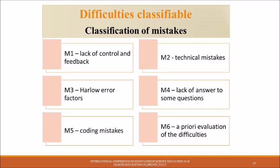M6: A priori evaluation of the difficulties. The students are not able or do not pay attention to evaluate the difficulties of each question or problem, which also includes being able to choose the easier solution strategy.